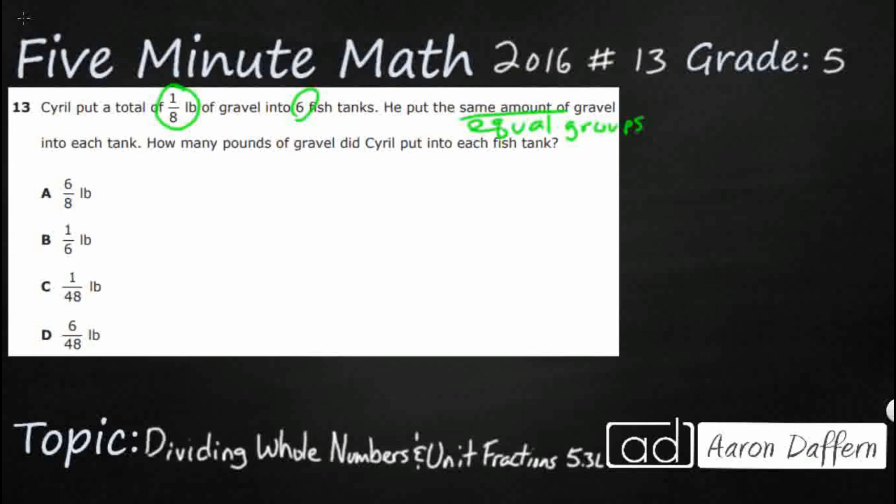Well, let's first see if we can figure out what we're doing here with a strip diagram. So we have our total right there. So not a whole lot, but we'll go ahead and put it one-eighth pounds right there. LB is our abbreviation for pound. And we're going to divide it into six fish tanks. So it looks like we're going to be doing division. Let's draw that right here.